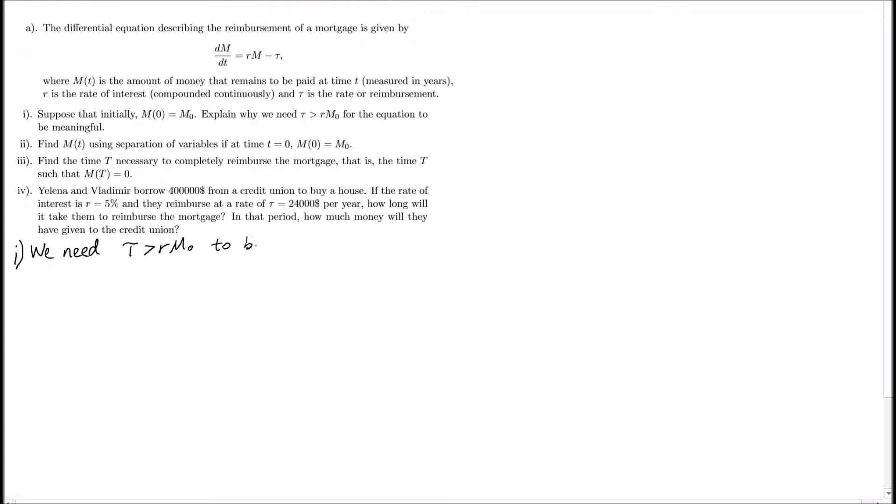We need that to happen, otherwise our dM/dt is positive, so we're not paying off the mortgage. We need T to be bigger than rM_0 to be paying off the mortgage.